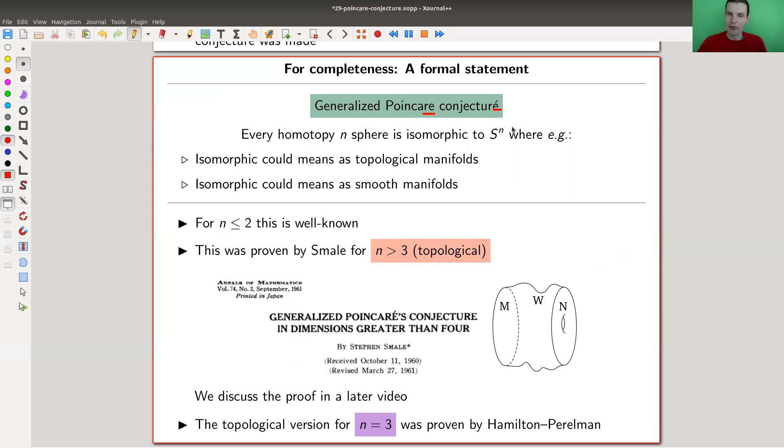What is called the Generalized Poincaré Conjecture - I actually found a funny typo here. The idea is that any homotopy n-sphere is isomorphic to Sⁿ, where you could mean isomorphic as topological manifolds or smooth manifolds.